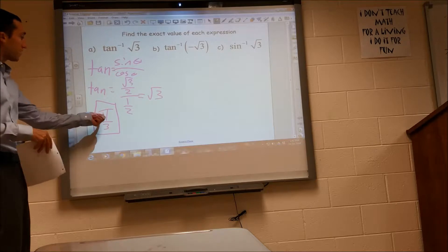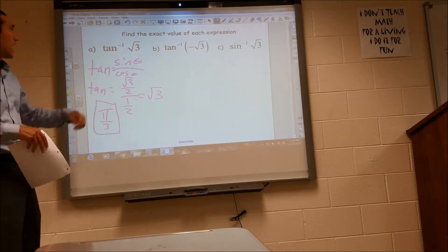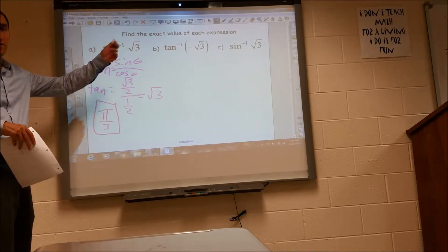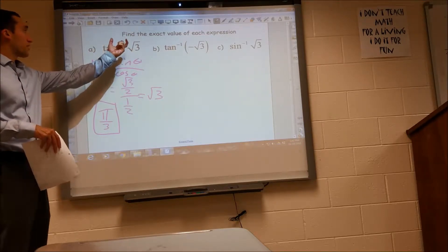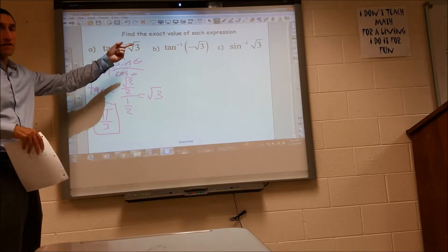Because if I did tangent of pi over 3, I would get radical 3 back in return. So basically when they want an inverse trig function, they want the angle that gives you that value.